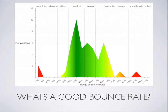If you're at 56 to 70 percent, you're pretty high and you need to work on a few things — you need to figure out why people are bouncing. Your website is almost not doing you any justice. And if you're higher than 70 percent, you basically just wasted $10 on a domain name because your site is bouncing all over the place.